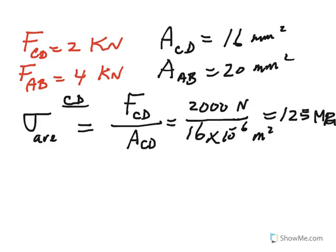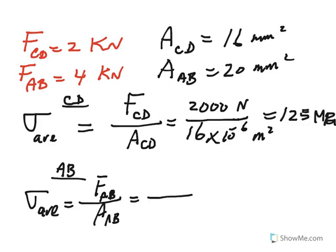And now do the same thing for member AB. So sigma average in member AB would be similarly FAB divided by cross-sectional area of AB. So this time we have 4 kilonewtons forcing that member, that's 4,000 newtons, divided by 20.